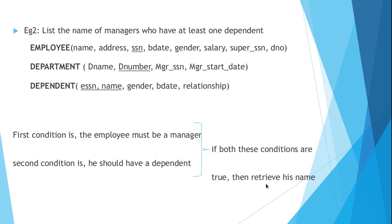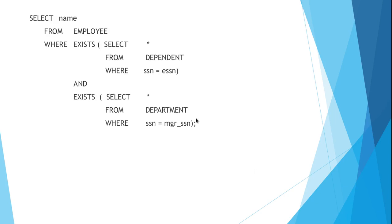If both conditions are true, we retrieve that employee's name. The query is written as: SELECT name FROM employee WHERE EXISTS (first inner query checks whether an employee has a dependent) AND EXISTS (second inner query checks whether the employee is a manager). The two inner queries are connected with a logical AND operation. Only if both inner queries return true will the logical AND return true and the employee's name be retrieved.